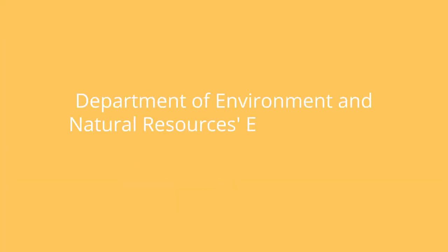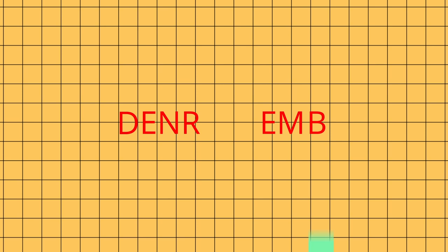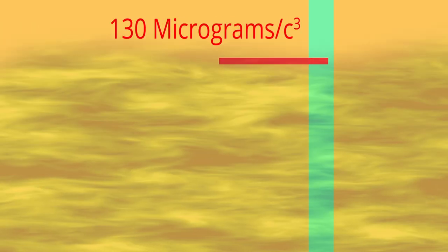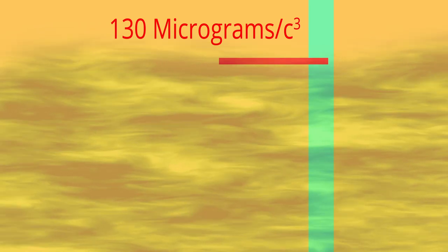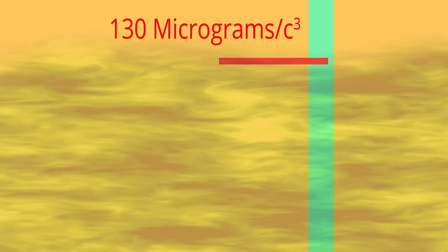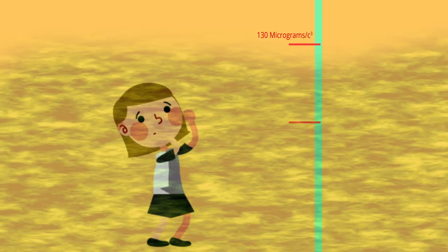According to the Department of Environment and Natural Resources Environmental Management Bureau, or DENR-EMB, Metro Manila's air quality worsened even more last year, 2015, with the air pollutant concentration in the national capital region reaching 130 micrograms per normal cubic meter by the end of 2014, and the maximum safe level of air pollutant concentration is 90.